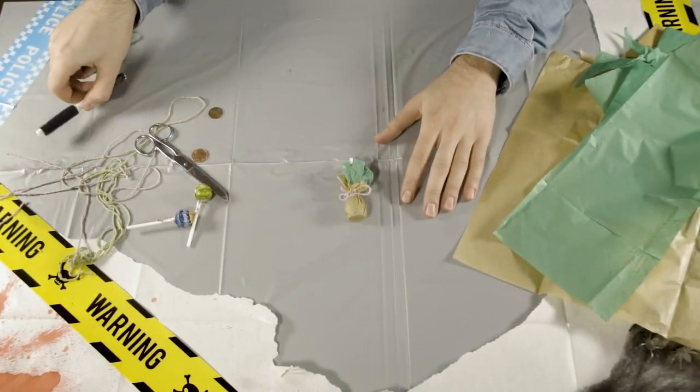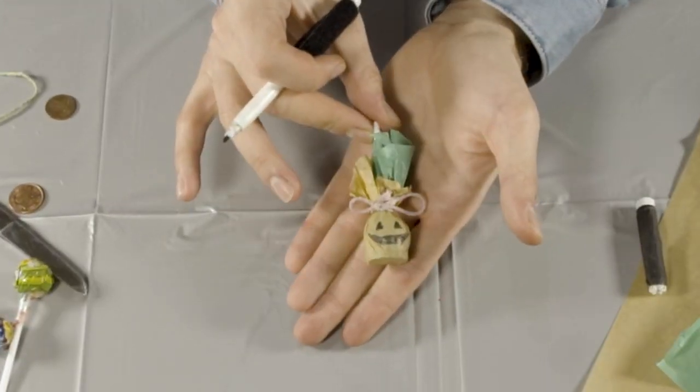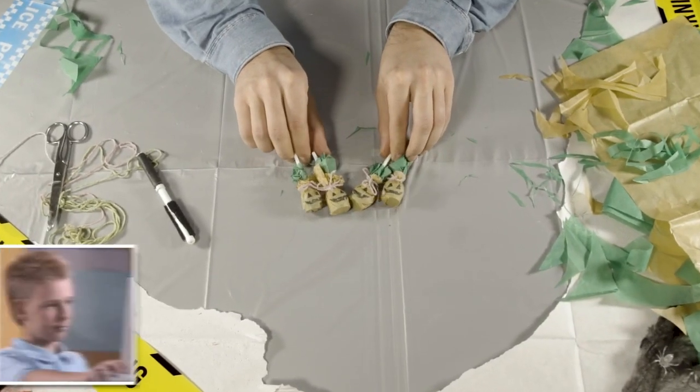Now, take your twine and tie it neatly around the tissue to hold it in place. For the finishing touch, use a permanent marker to add a classic jack-o'-lantern face. So simple, yet so effective.